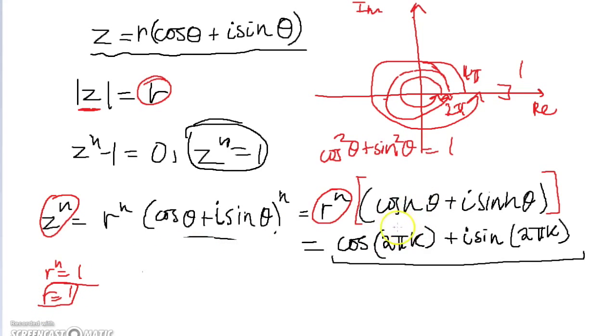So we can now just compare the argument of, change color, the argument of this complex number and the argument of this complex number. Argument meaning angle it creates with the x-axis. So we have n theta has to be 2 pi times k, where k is just some integer.